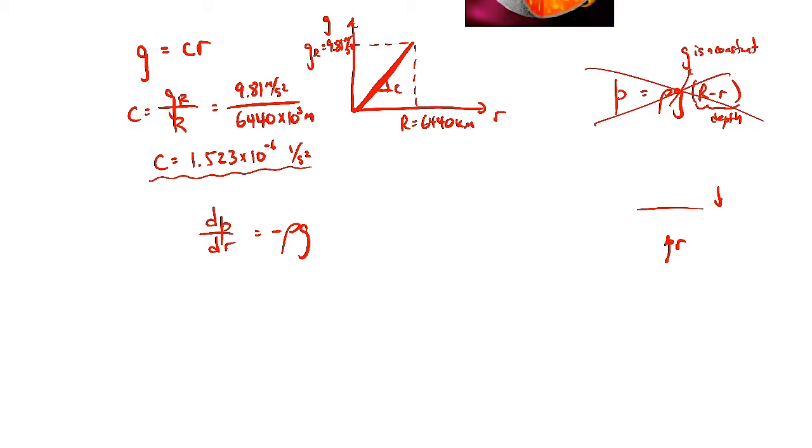and that's because radius is pointing in the opposite direction of gravity. So here's the surface of the earth. Draw a little curve there, and there's gravity pointing downward. So they're in opposite directions, so that's why we have a minus sign here. So I can substitute in for gravity, since it's a function of radius. So it's that constant times the radius. Now I have this first order differential equation.